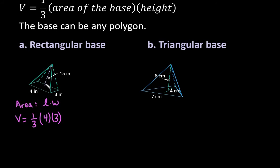And then we would go times the height of the pyramid. So the height of the pyramid is the distance from the top point to the base. And so we would go times 15.